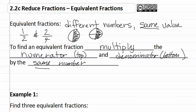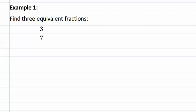Let's look at example one. Example one asks us to find three equivalent fractions for three-sevenths. Remember, to find an equivalent fraction, we multiply the numerator and denominator by the same number, so we can pick any number we want. I'm going to pick the number two, which means I need to multiply the numerator and the denominator by two. Three times two is six, seven times two is fourteen. Six-fourteenths would be an equivalent fraction to three-sevenths.